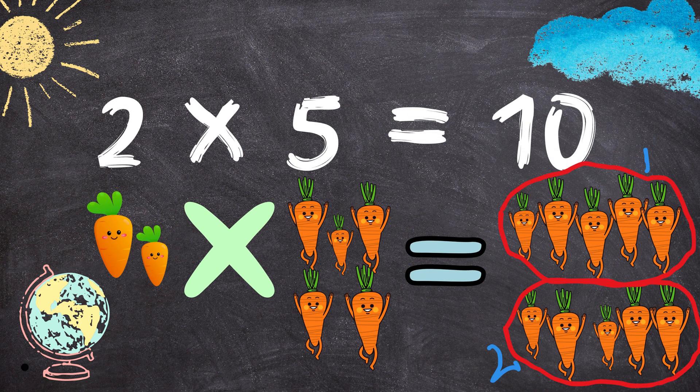Two times five equals ten. Two carrots multiplied by five carrots will give you one, two, three, four, five, six, seven, eight, nine, ten carrots.